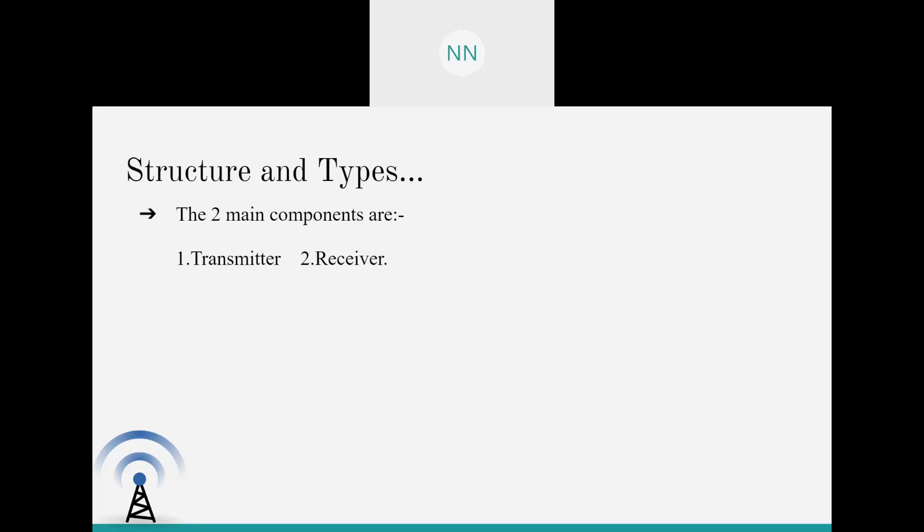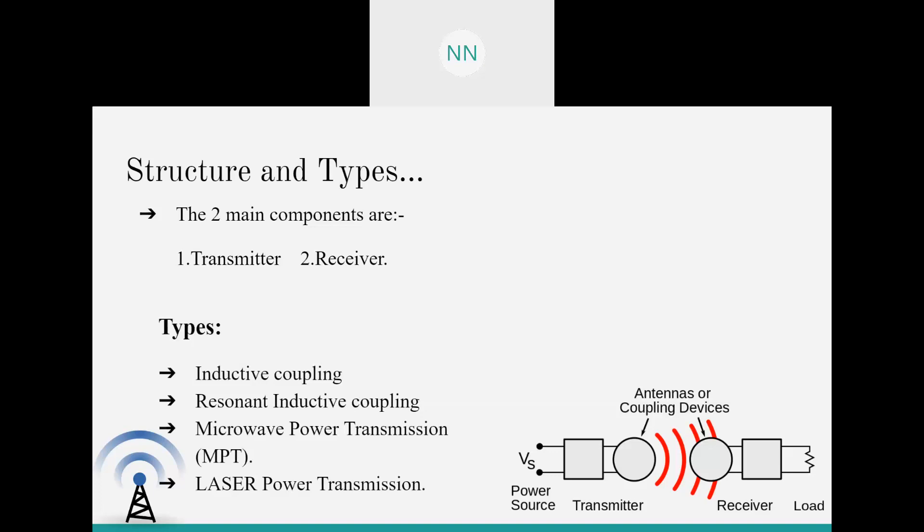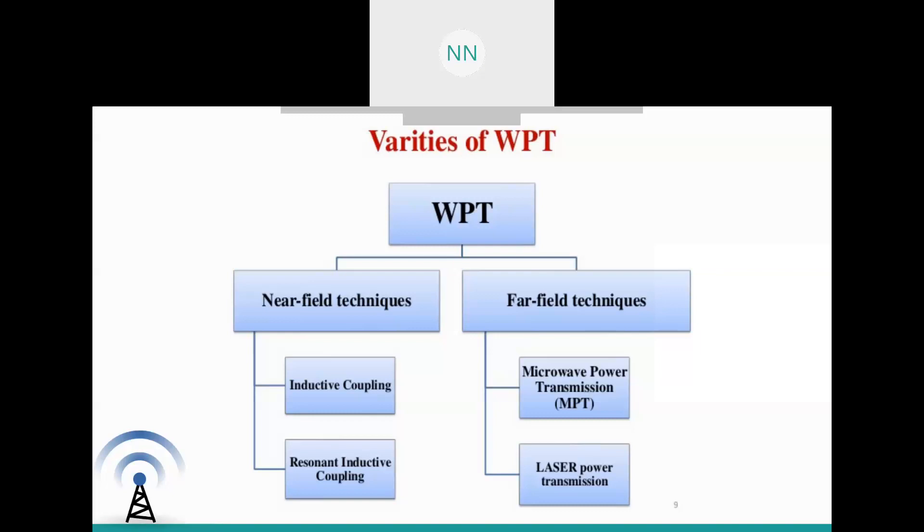The main types of wireless power transmission are inductive coupling, resonant inductive coupling, and microwave power transmission and laser power transmission. We will go detailed into each one of them. Basically, wireless power transmission is divided into two: near field technique and far field technique. Resonant inductive coupling and inductive coupling are part of near field technique, whereas microwave power transmission and laser power transmission are part of far field techniques.